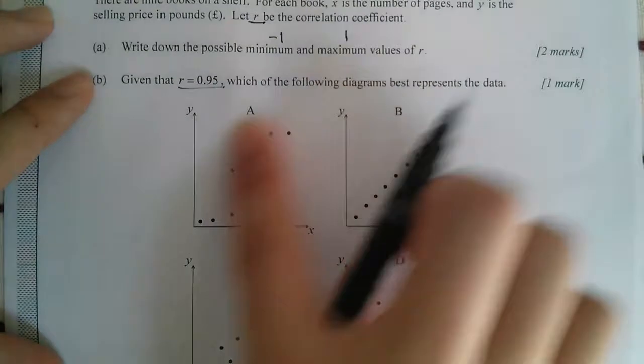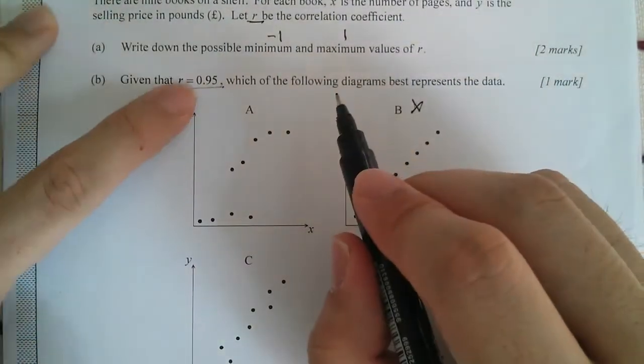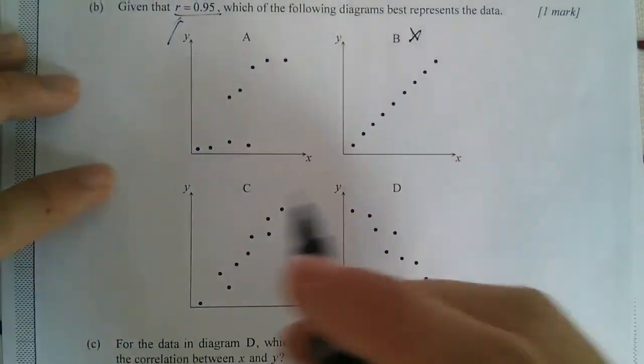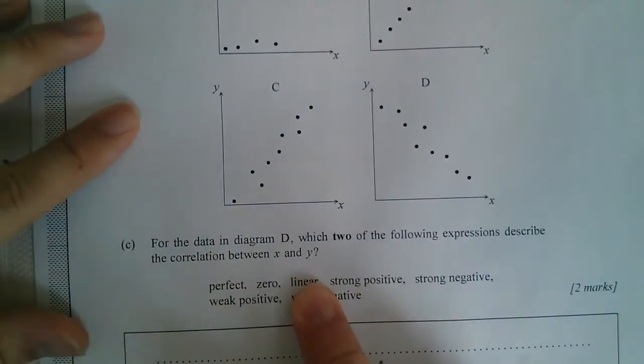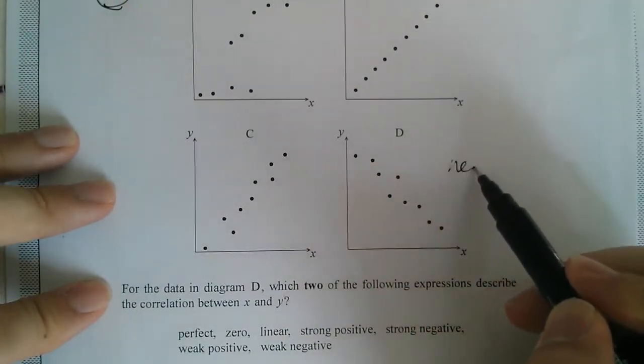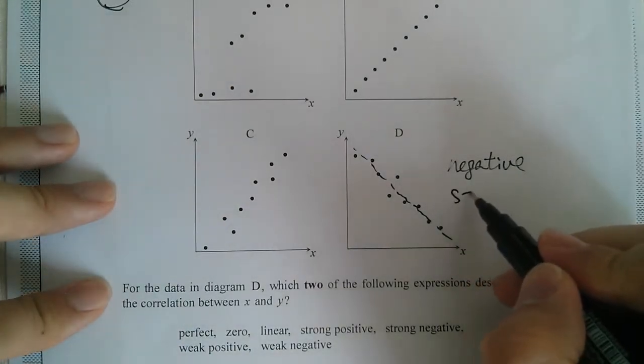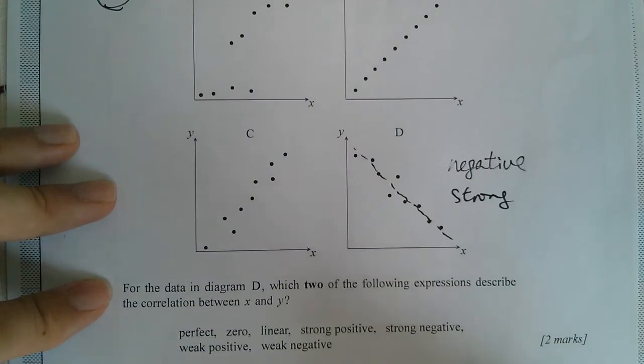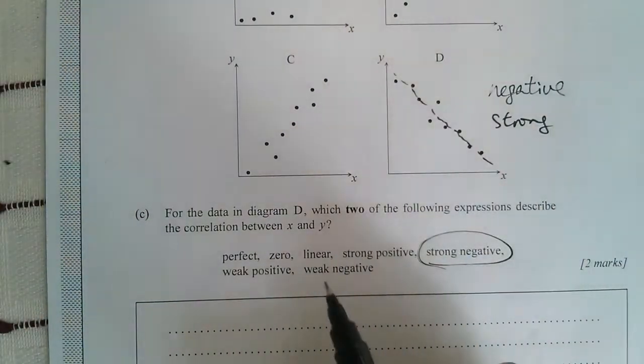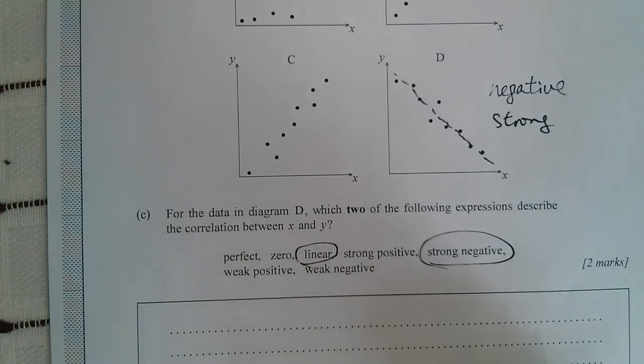For part B, what if R is 0.95? Which of the following diagrams would best represent the data? For 0.95 it's not exactly one, so it wouldn't be perfect, it wouldn't be a straight line, but it's pretty strong positive correlation. Positive means trending up and negative means going down. Therefore the answer is C. For part C, for the data in D, which of the two expressions would describe the correlation? This kind of correlation is negative and also it looks quite fit to a straight line. It's not perfect but it's quite strong. So it's strong negative correlation. We will use linear and strong negative.